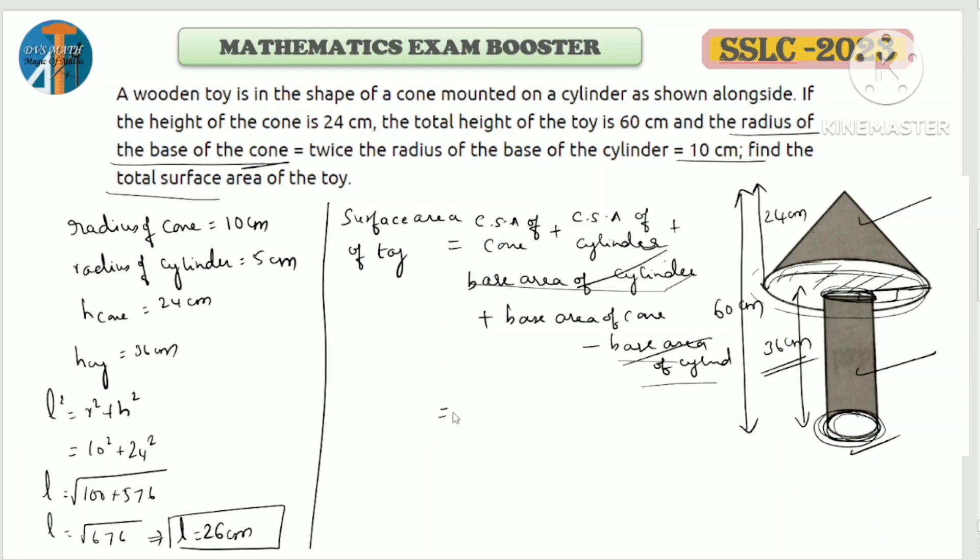CSA of cone is pi r l. CSA of cylinder is 2 pi r h. Plus base area of cone is pi r square. Let us substitute the values. Pi value we can take common later. Radius of cone is 10, slant height is 26, plus 2 pi. Radius of cylinder is 5, h is 36. Plus pi, r square of cone is 10 square.